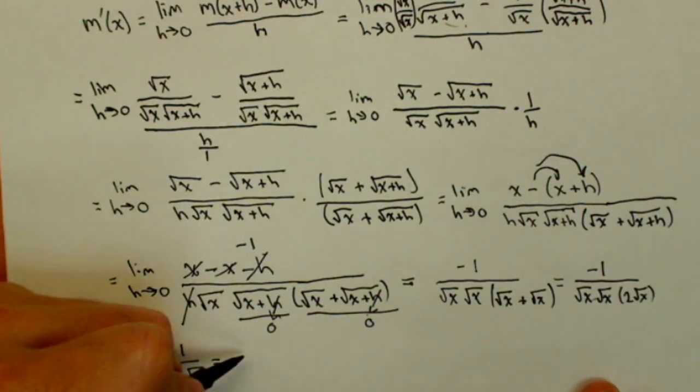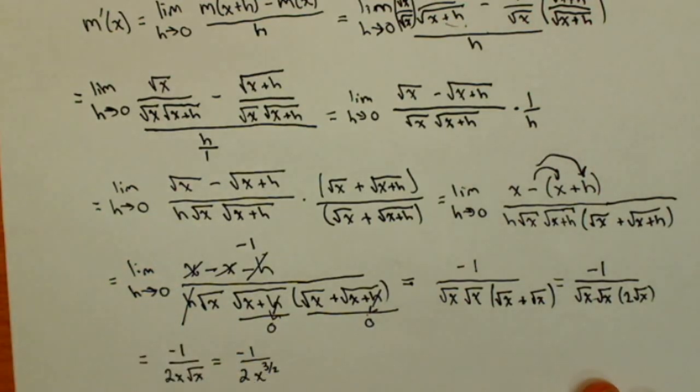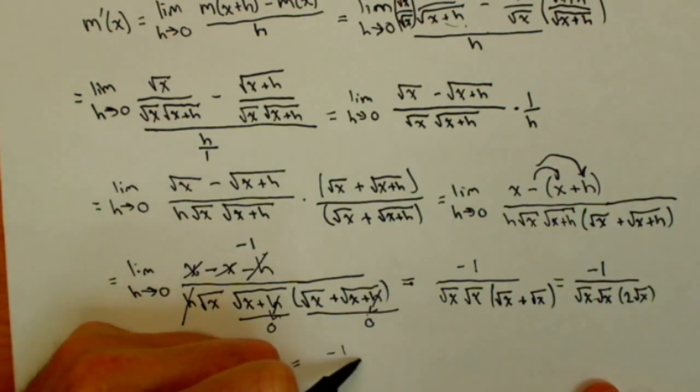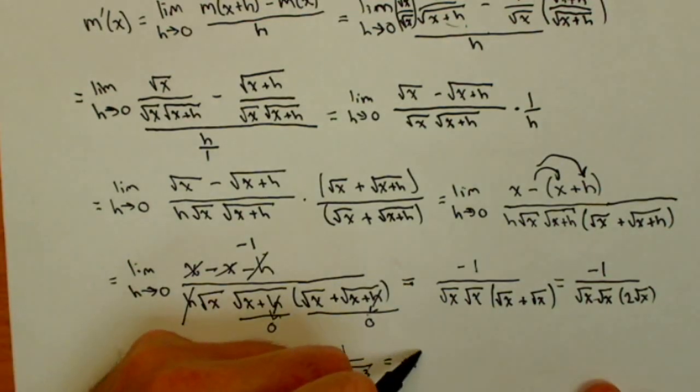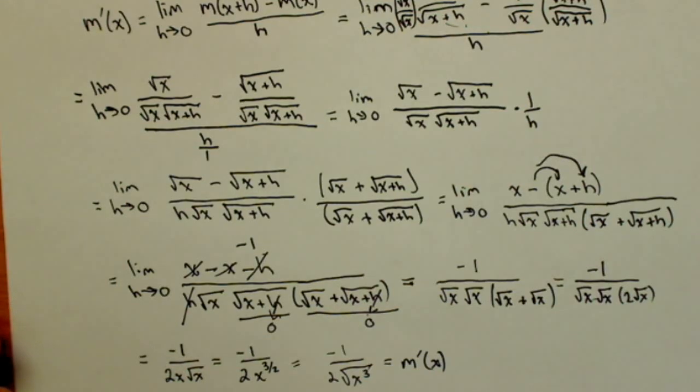Or, you're probably more commonly going to see it as negative 1 over 2x to the 3 halves. If you wanted to, we could rewrite it as negative 1 over 2 square root of x cubed, if you wanted to get the radical bar back in there. And there is our m prime of x, using the definition of the derivative.